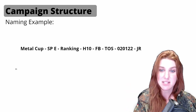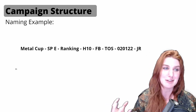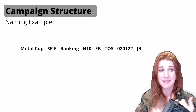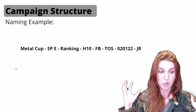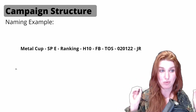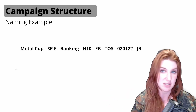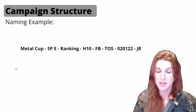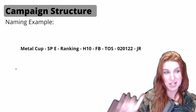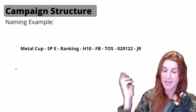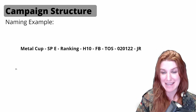From that one campaign name, I can see: it's a sponsored product exact match campaign, it's a ranking campaign, keywords came from Helium 10, we're using fixed bids, TOS means top-of-search placement, I know when we launched it, and JR tells me our agency launched it. You can see how that clean, concise naming structure cuts down immensely on time versus having 'campaign one' and 'campaign two' — where you have no idea what's in them.